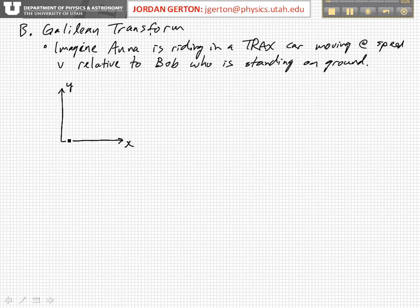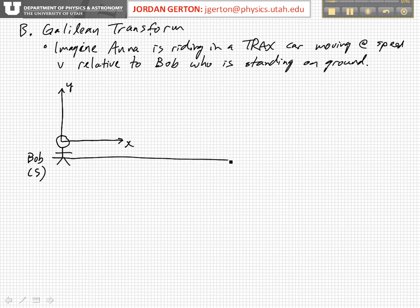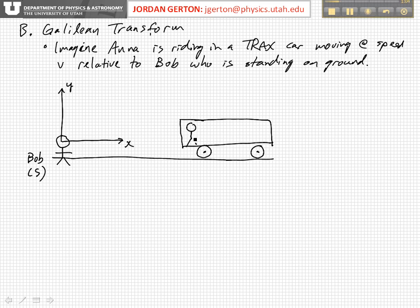Let's set up the unprimed coordinate system for Bob. This is Bob, coordinate system reference frame S, and he's standing on the ground. Over here we have Anna, riding in a Trax train, and she's got a coordinate system attached to her — this is going to be the prime coordinate system.